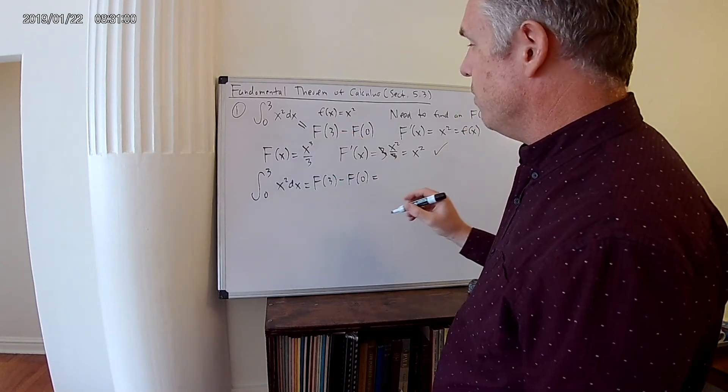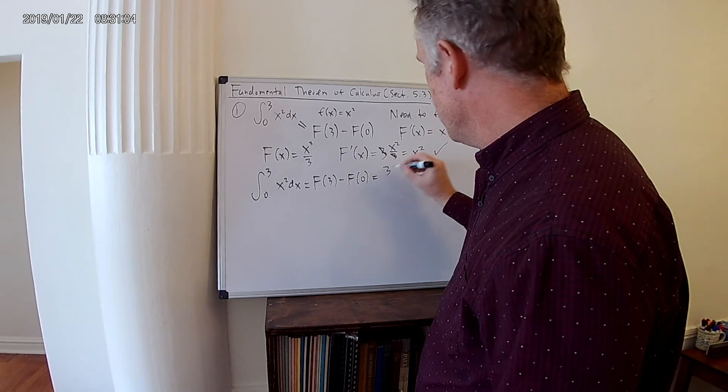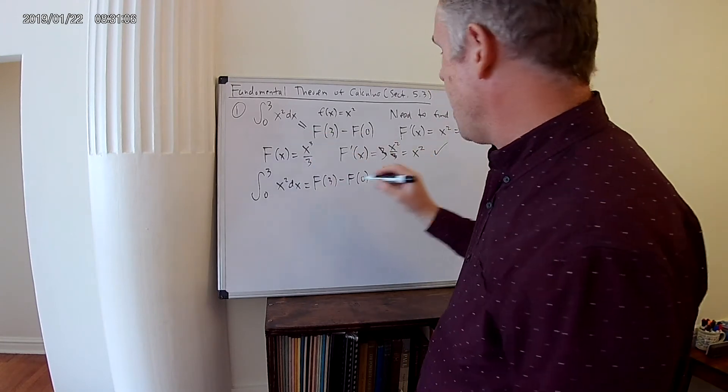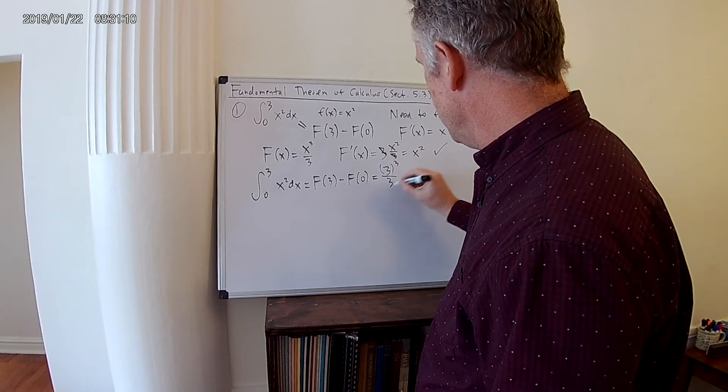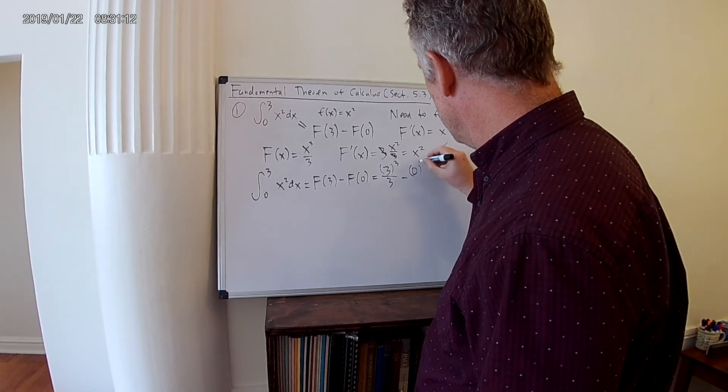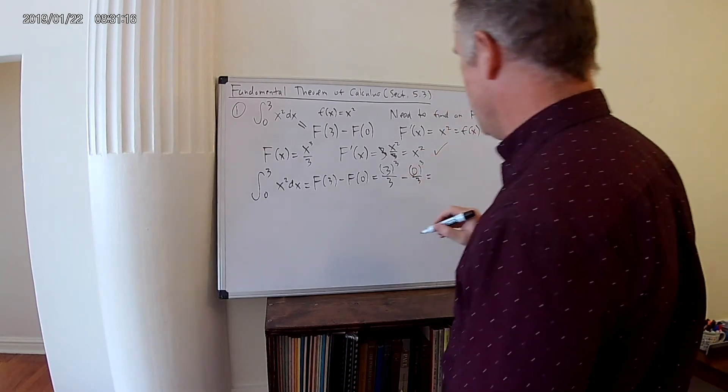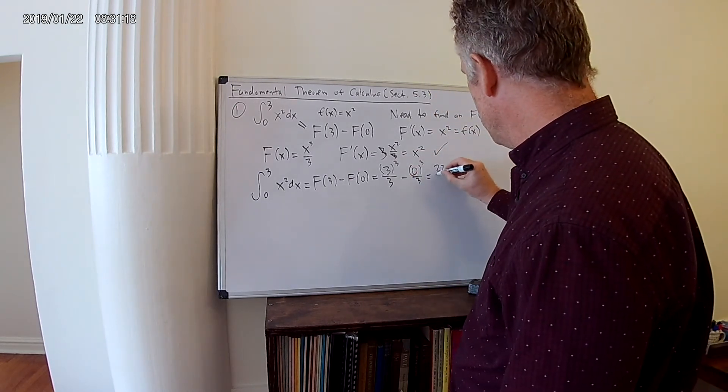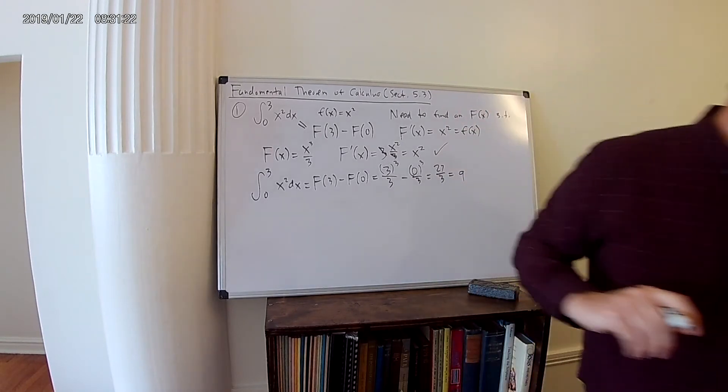And now we know what the antiderivative is, so what we do to evaluate this is we plug in 3 for x, because that's our capital F. We get 3 cubed over 3 minus 0 cubed over 3. And this gives us 27 over 3, which equals 9.